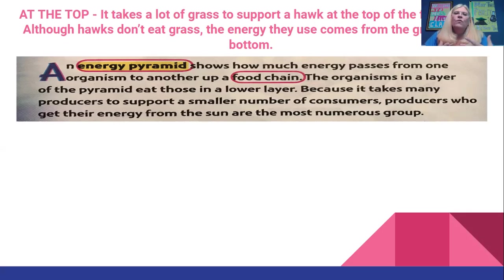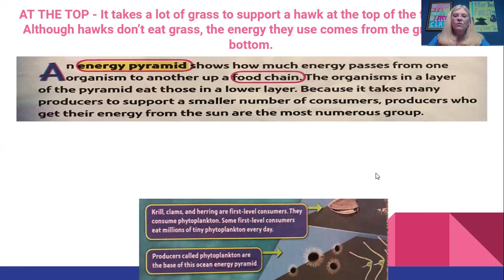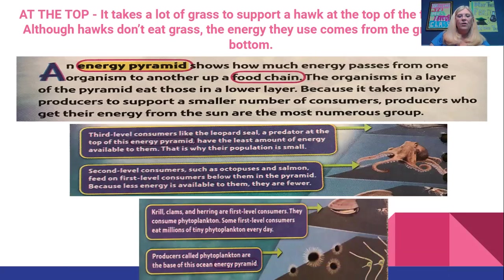An energy pyramid shows how much energy passes from one organism to another up a food chain. Organisms in a layer of the pyramid eat those in a lower layer, because it takes many producers to support a number of consumers. Producers, who get their energy from the sun, are the most numerous group. Krill, clams, and herring are first level consumers — they consume phytoplankton from the first level. Some first level consumers eat millions of tiny phytoplankton. Third level consumers like the leopard seal are predators at the top of the energy pyramid, with the least amount of energy available to them, which is why their population is small.